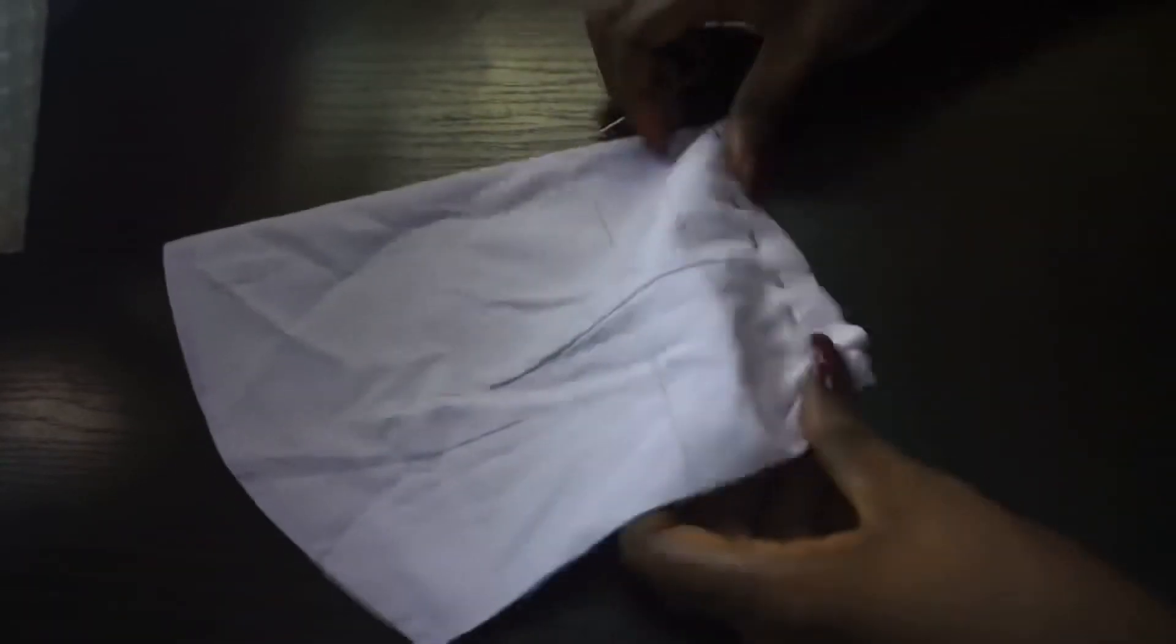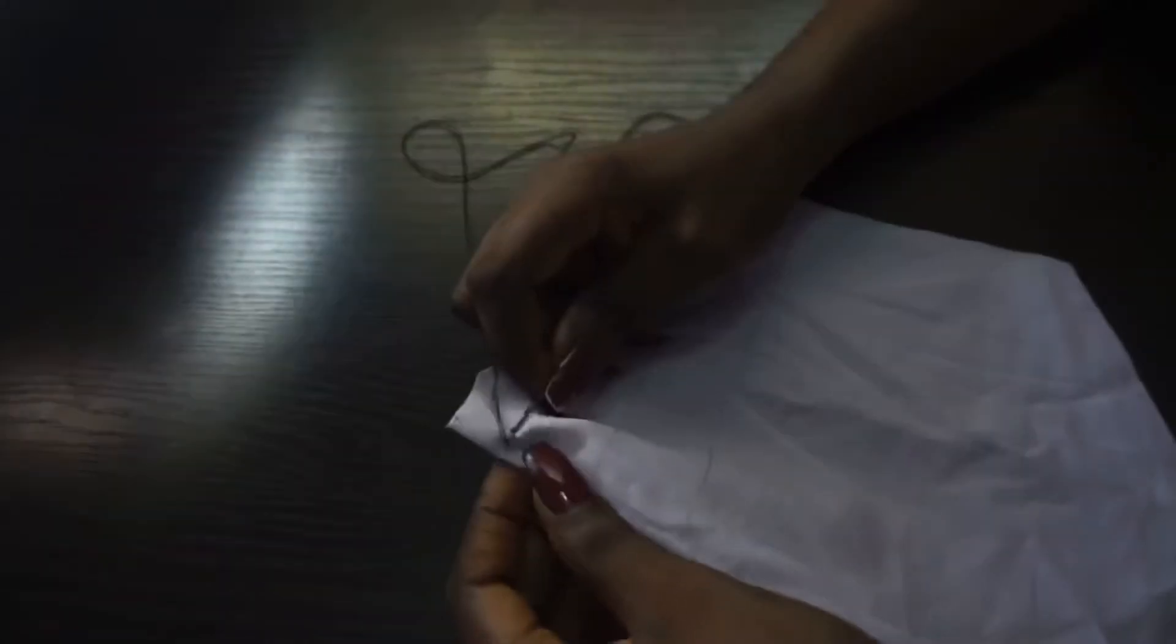You can tie a knot at the end of your stitches like so. Because I'm not trying to create that, I'm just going to go over the thread twice to create a knot at the end of my stitches.